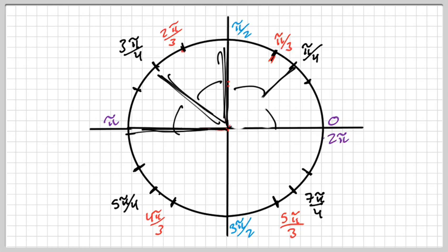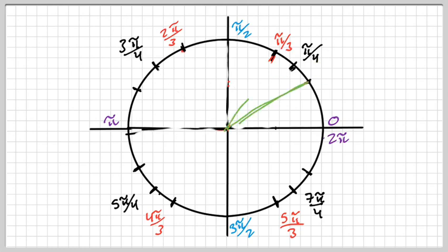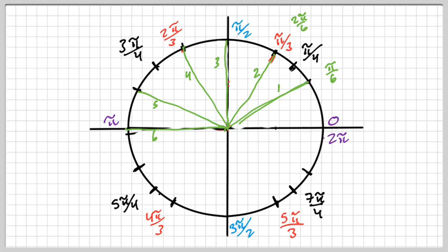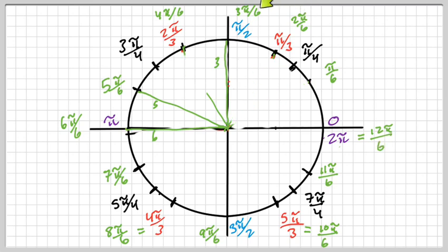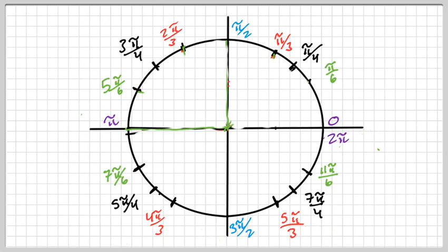The last one we're going to do is pi over 6. You can split it into six sections: pi over 6, 2 pi over 6, 3 pi over 6, 4 pi over 6, 5 pi over 6, 6 pi over 6, 7 pi over 6, 8 pi over 6, 9 pi over 6. Now all the angles that can be simplified we don't need — we don't need 2 pi over 6, 3 pi over 6, or 4 pi over 6, because we already have angles for those. And then boom, you're done — those are all the angles you need for the unit circle.